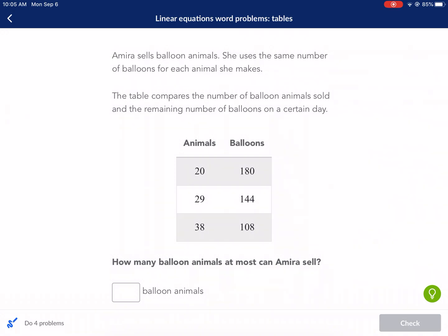Hi everyone, this is Mr. West. We're doing another Khan Academy tutorial today, this time on linear equation word problems with tables. So we're going to be given some data in a table and we're supposed to figure out the scenario based on the prompts it gives us.